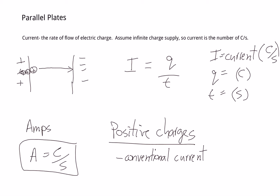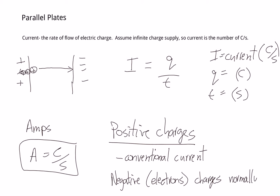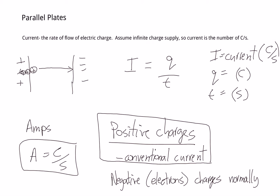Normally we don't have positive charges moving. What we typically consider moving in electricity — like in your wall plugs — are the negative charges, the electrons. So the flow of electrons is what we normally call our current. If you ever see the term conventional current, that just means positive charges are flowing instead of negative charges. That's pretty much it for current — it's a pretty easy formula and you can solve any kinds of questions dealing with current, time, or charge.